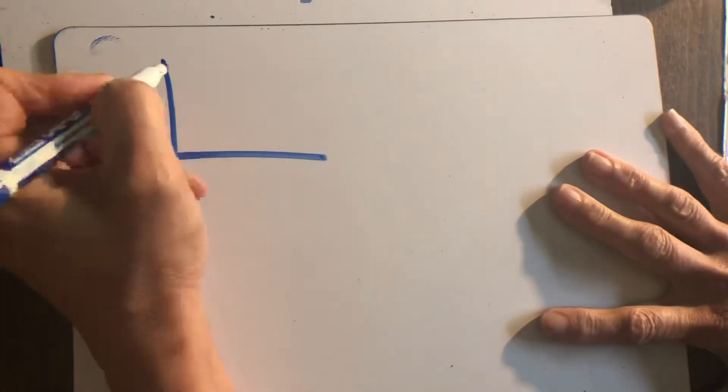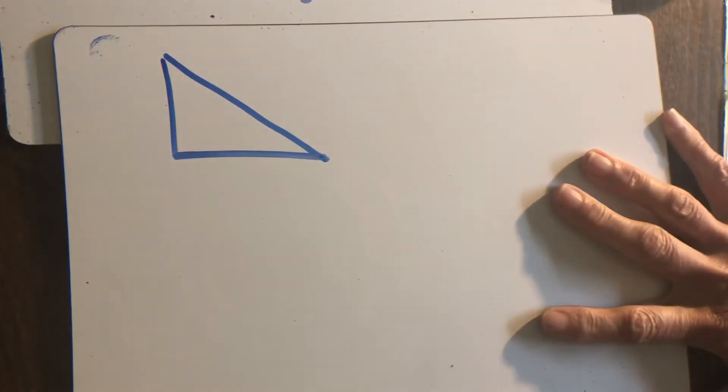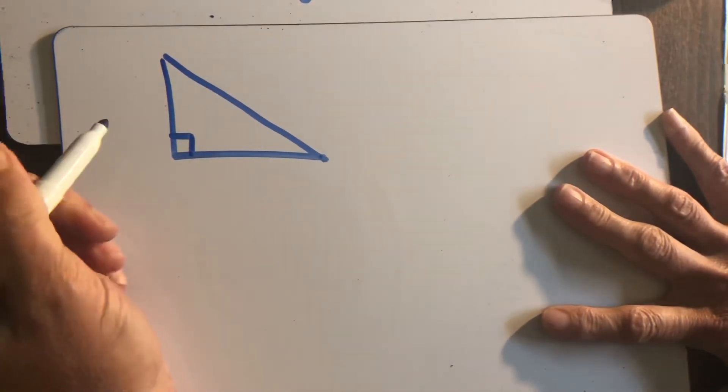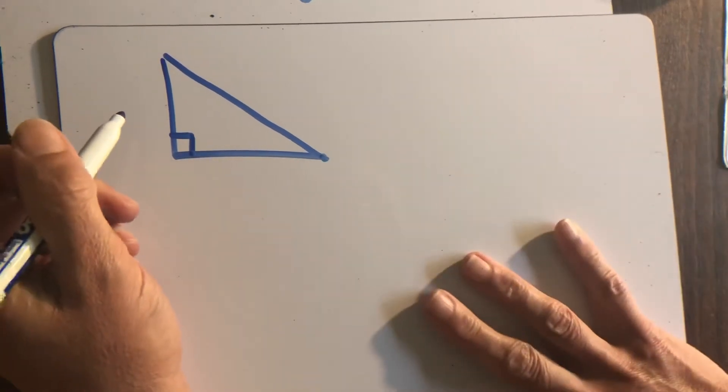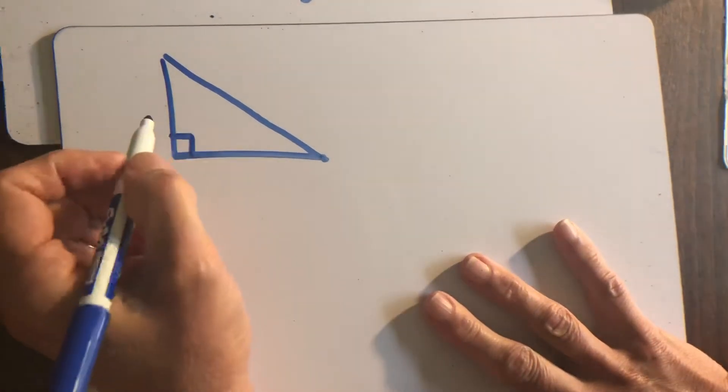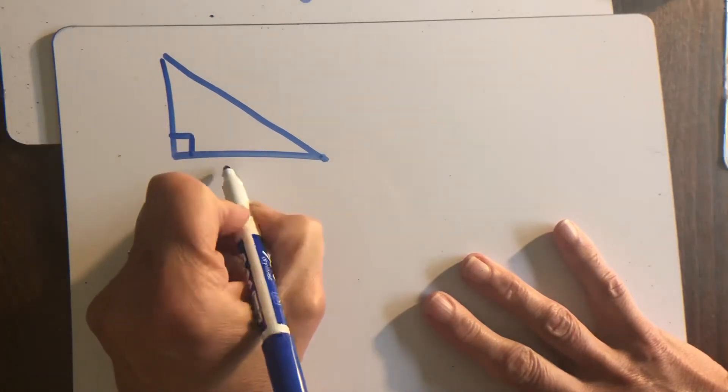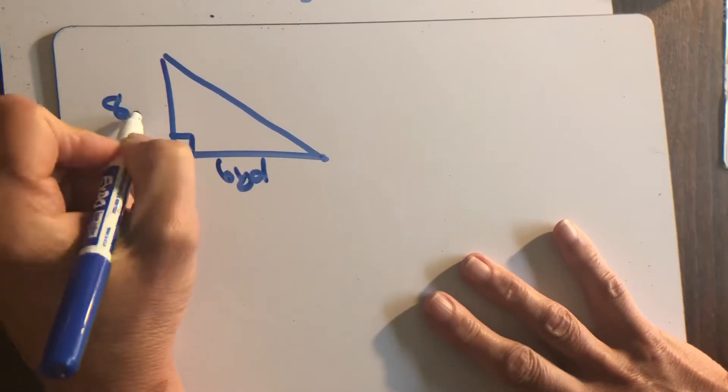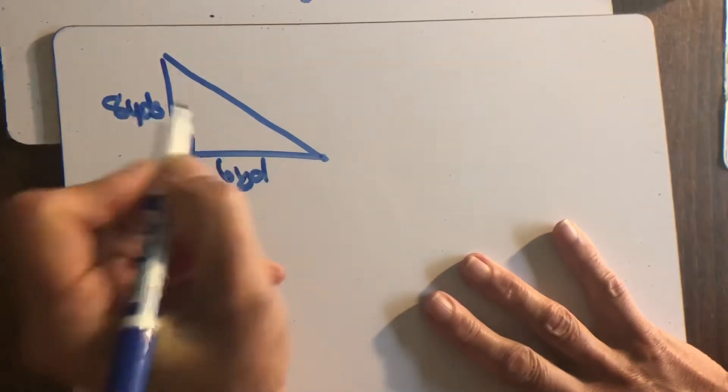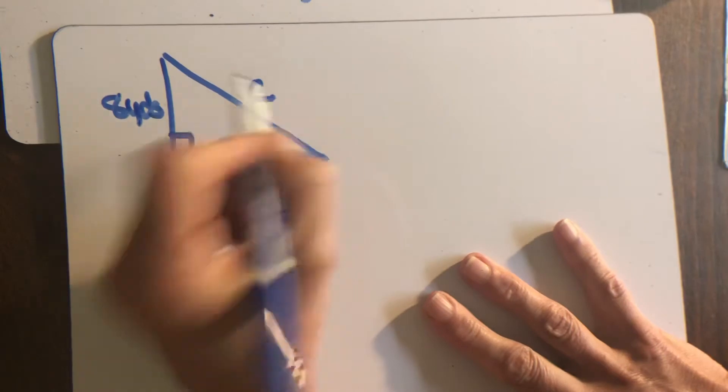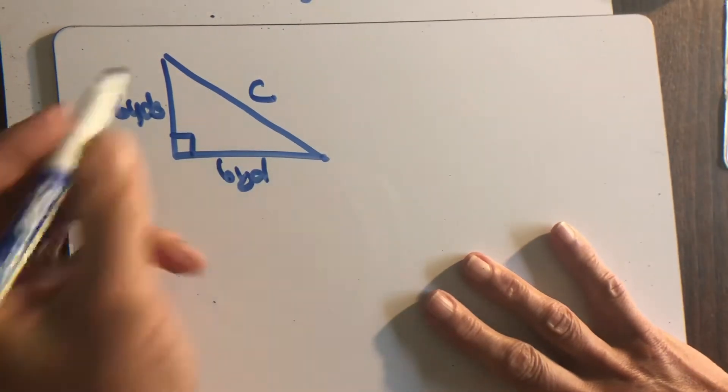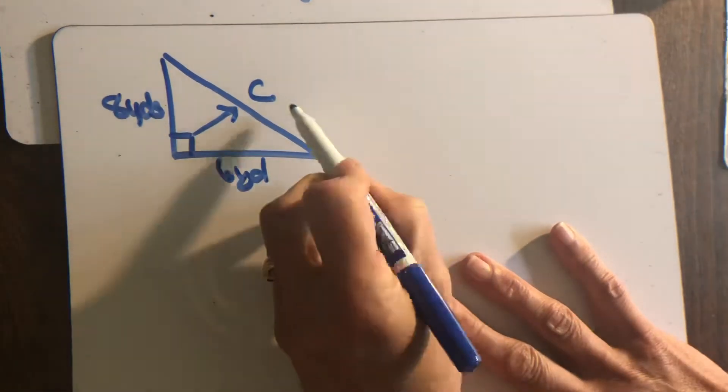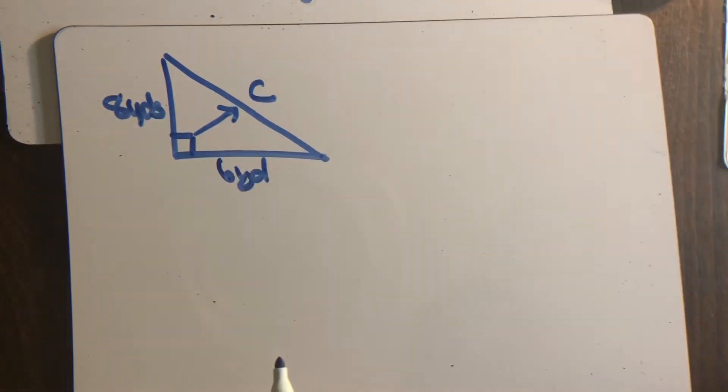Remember how I talked about doing that? We don't want to spend a bunch of time drawing this. Your test is timed. You're not there to draw beautiful triangles. You're just there to get an answer so you can pass, right? Now let me go ahead and set my problem up. So this is six yards and eight yards, and this is C.